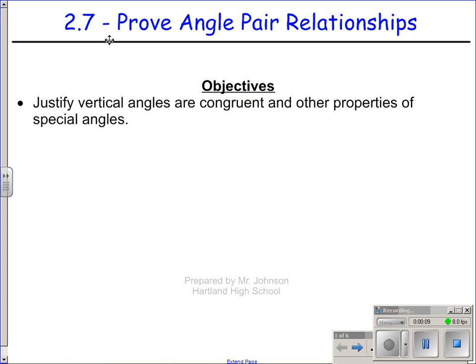Some of the angle pair relationships that we have talked about are complementary, supplementary, vertical angles, and linear pairs. We're talking about the proofs of them. These are things that we've just kind of accepted as true. In this section, we're going to talk about why they're true and how they're true, so we're going to prove them.